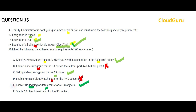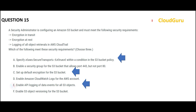Option E enables API logging of data events, which addresses the object retrieval logging requirement. Once you enable API logging in CloudTrail, you will know the object retrievals. Option F is straight-up wrong — it only addresses versioning, and there is no versioning requirement in the question. The requirements are encryption in transit, encryption at rest, and logging of object retrievals. So options A, C, and E are my final answers.